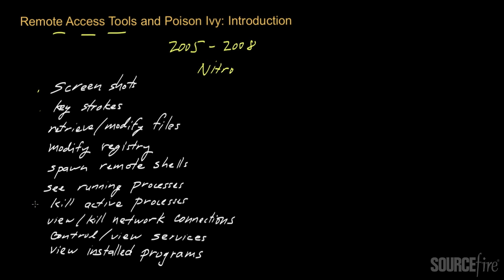There are other remote access tools out there that have been used by attackers. Examples include Dark Comet and Shady RATs, among a whole bunch of others, though I won't go into all of them in this particular video.